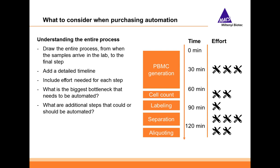When I talk to customers about automation, I ask them to draw the entire process from when the samples arrive in the lab to the final step. This is a generalized and simplified process that might go from PBMC generation to cell counting, to cell labeling, then separation, and an aliquoting step at the end. Normally I'd go on a big whiteboard and add all the details — such as number of samples, type of samples, and volume — but we'll use this as a simplified example today. Once you have your process overview, add a detailed timeline. If you're not sure about the times, start a stopwatch and take notes next time you do this.